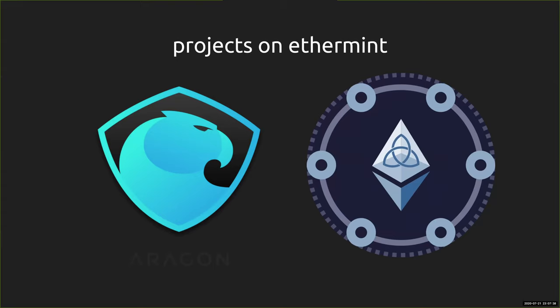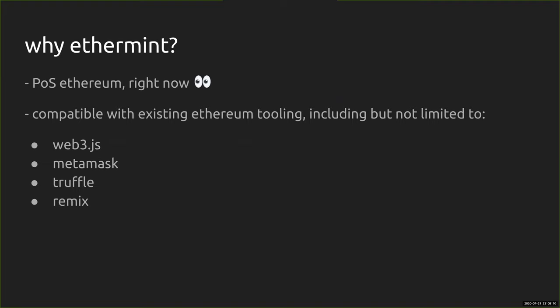Some of the projects on Ethermint: currently there is Aragon Chain, which is in development — Aragon network on top of Ethermint — hopefully launching later this year. There's also an Ethermint zone, which is going to be a fully fledged Ethermint chain, also in development. Why Ethermint in particular? It is proof of stake — the promised proof-of-stake Ethereum — but it exists right now. It's also compatible with all the existing Ethereum tooling, including Web3.js, MetaMask, Truffle, and Remix, which I'm going to show you today.